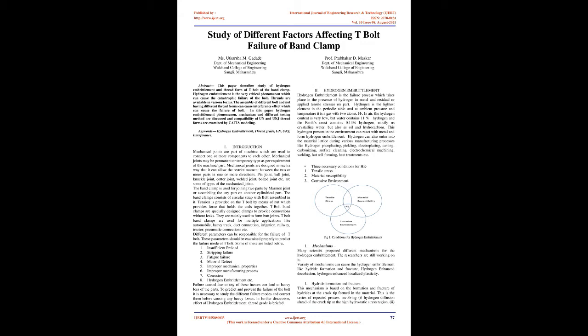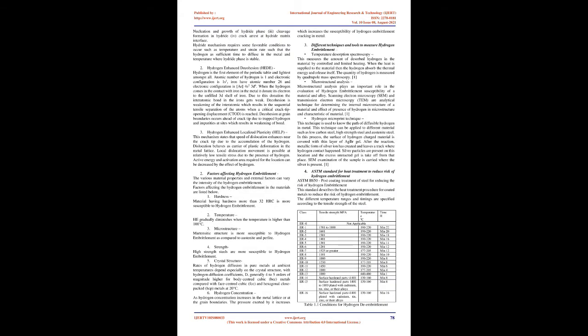The band clamp consists of a circular strap with a bolt assembled in it. Tension is provided on the T-bolt by means of a nut which provides force that holds the ends together. T-bolt band clamps are specially designed clamps to provide connections without leaks. T-bolt band clamps are used for multiple applications like automobile, heavy truck, duct connection, irrigation, railway, tractor, pneumatic connections, etc.